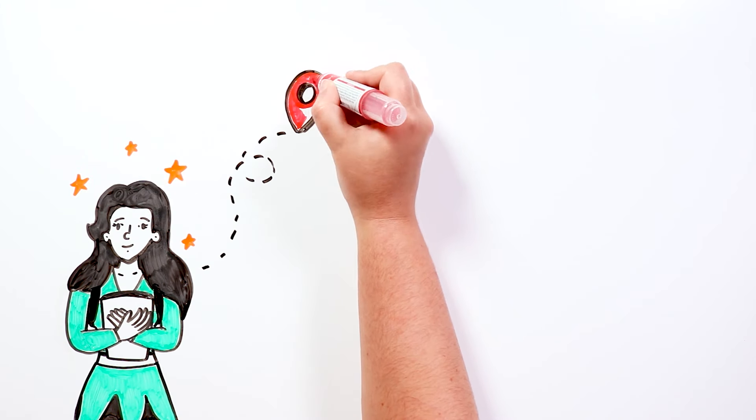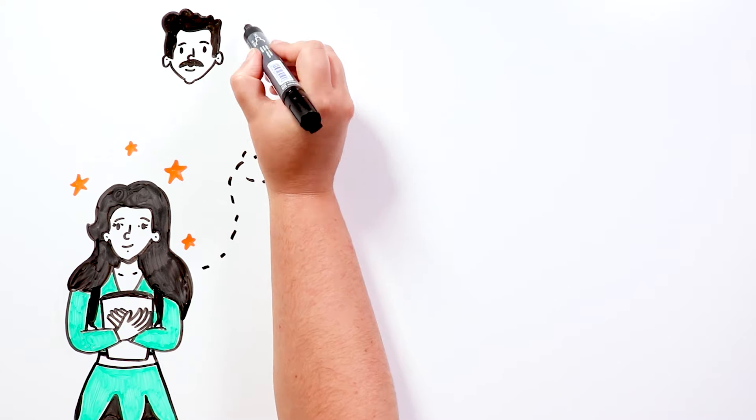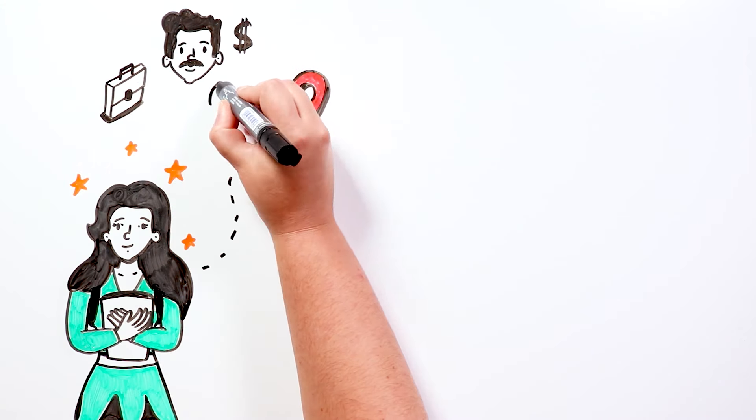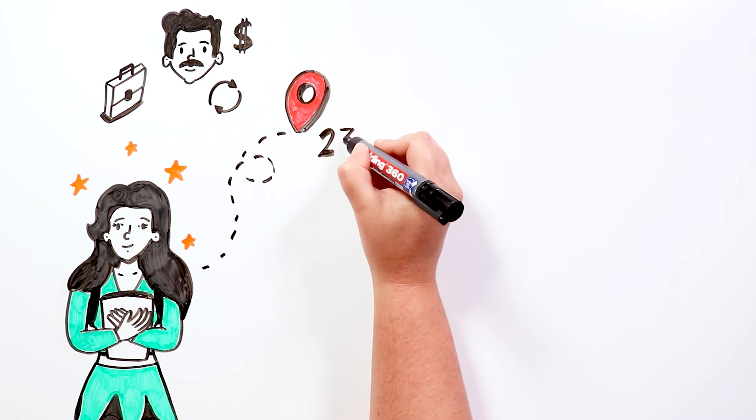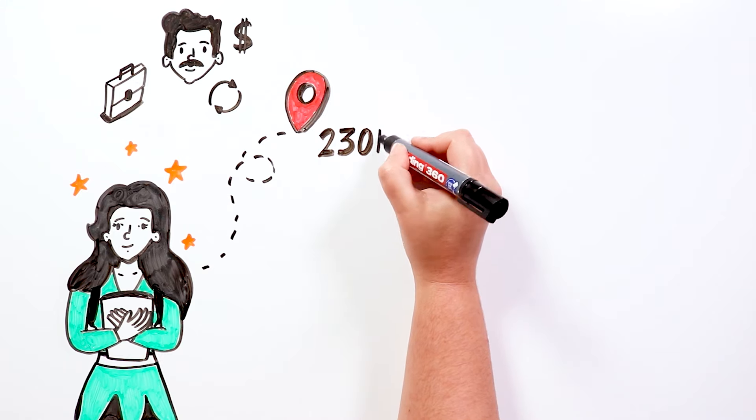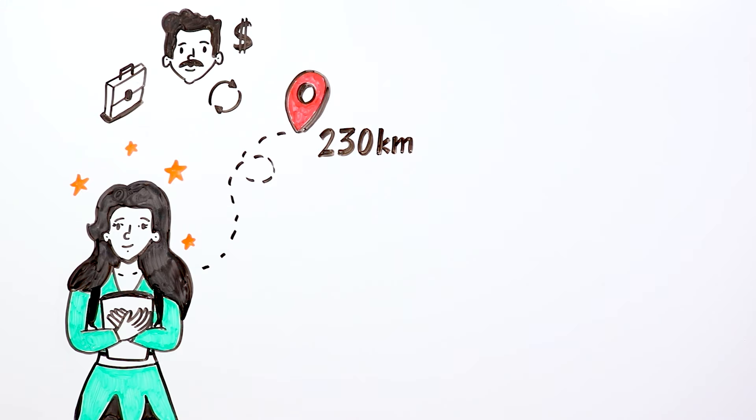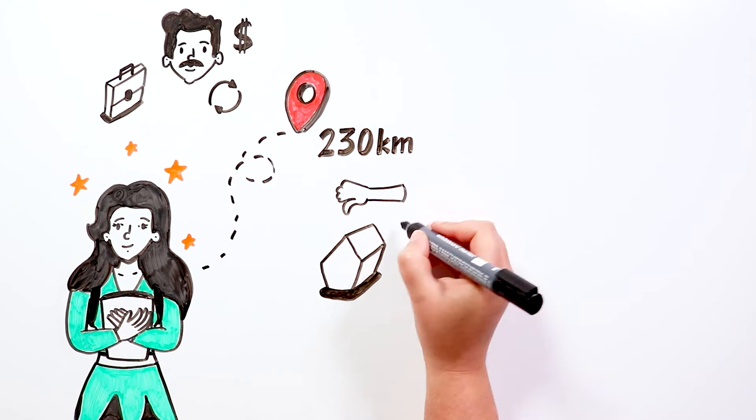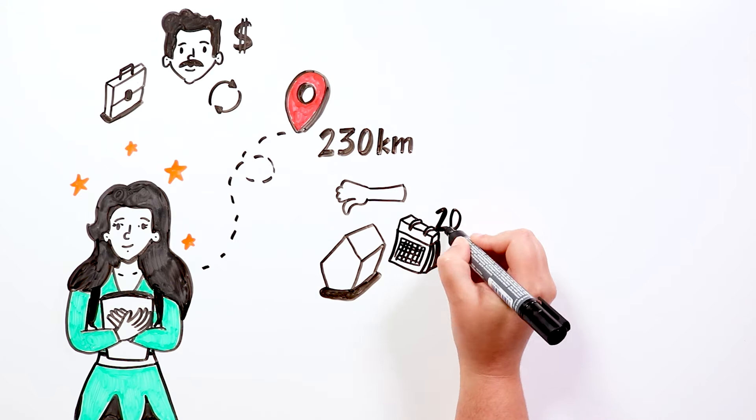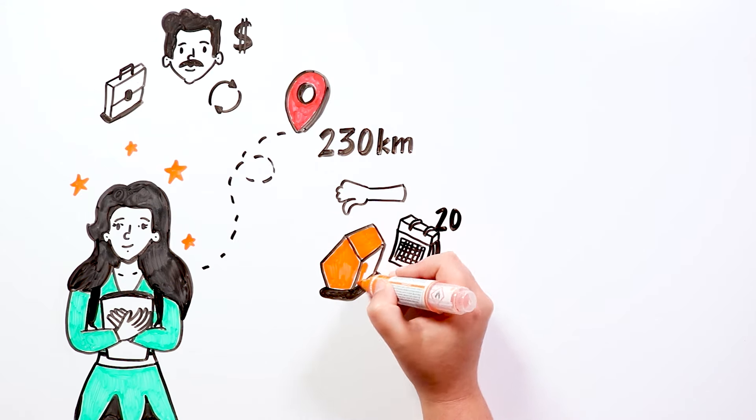Helena had moved to town that summer. Her father was a bank manager, and after a readjustment in his company he had been assigned a job 230 kilometers from home. In general, the move had not gone down well with the family, who had lived in the same house for more than 20 years.